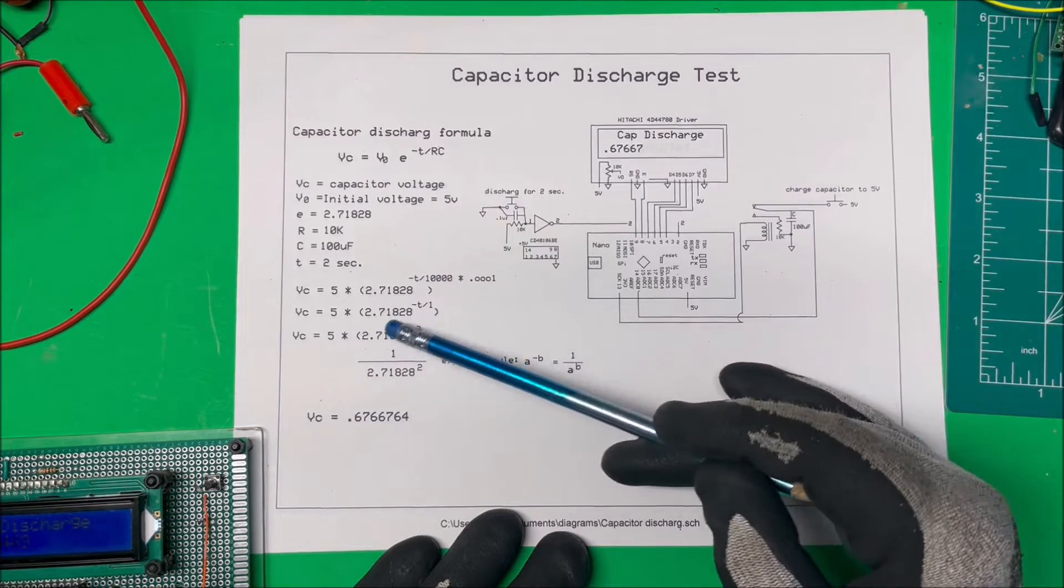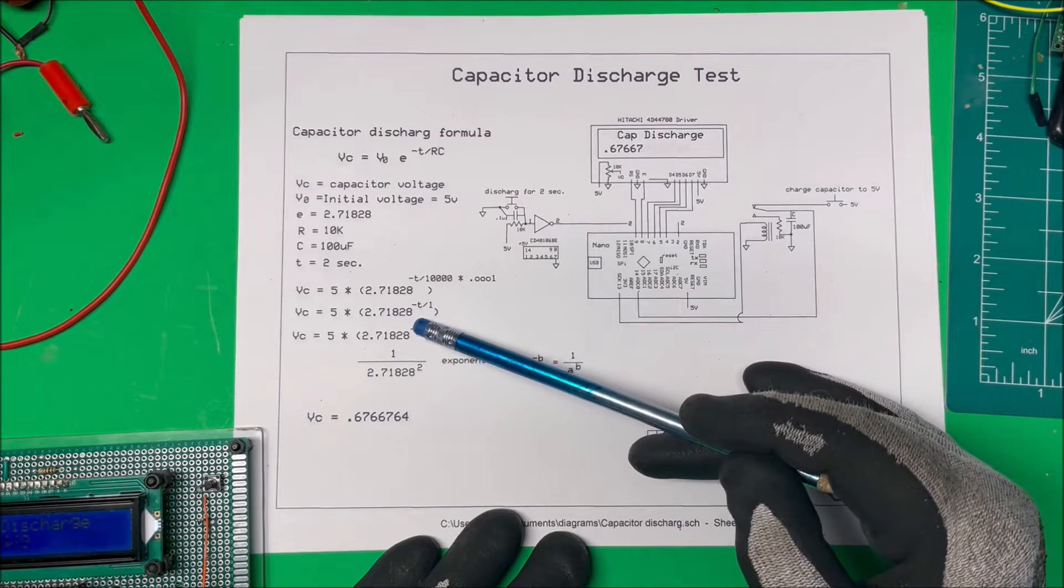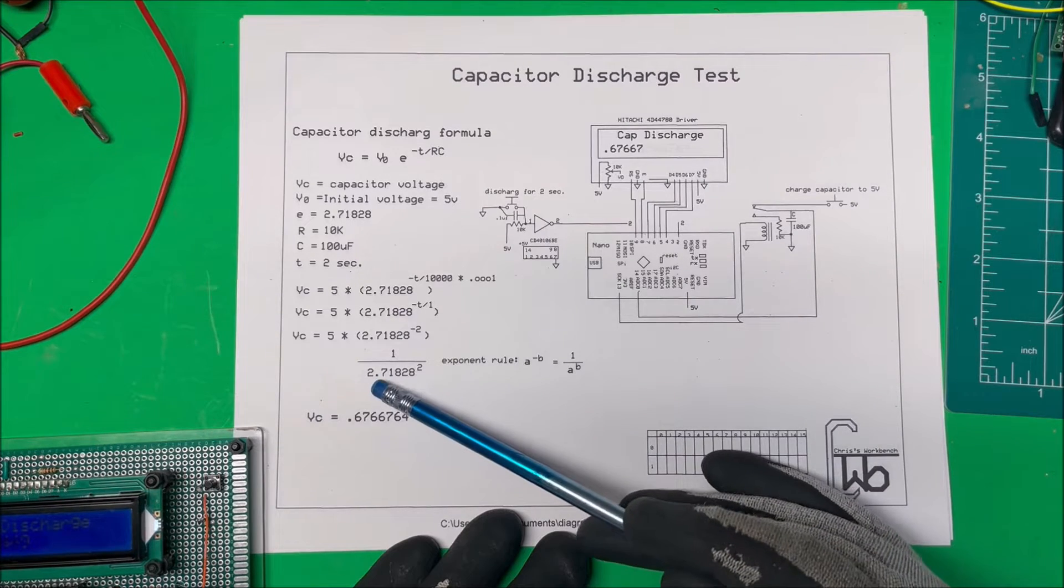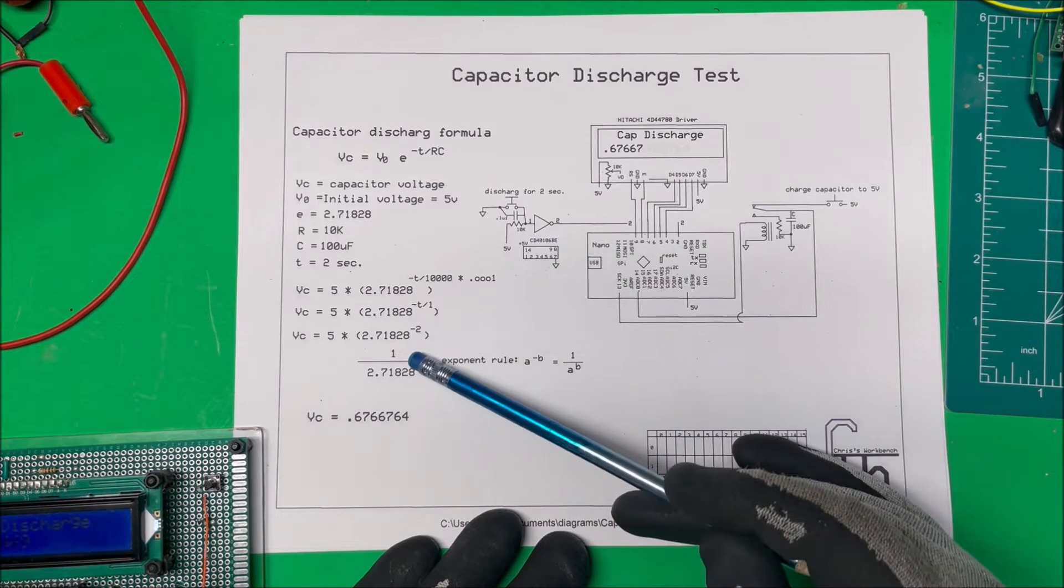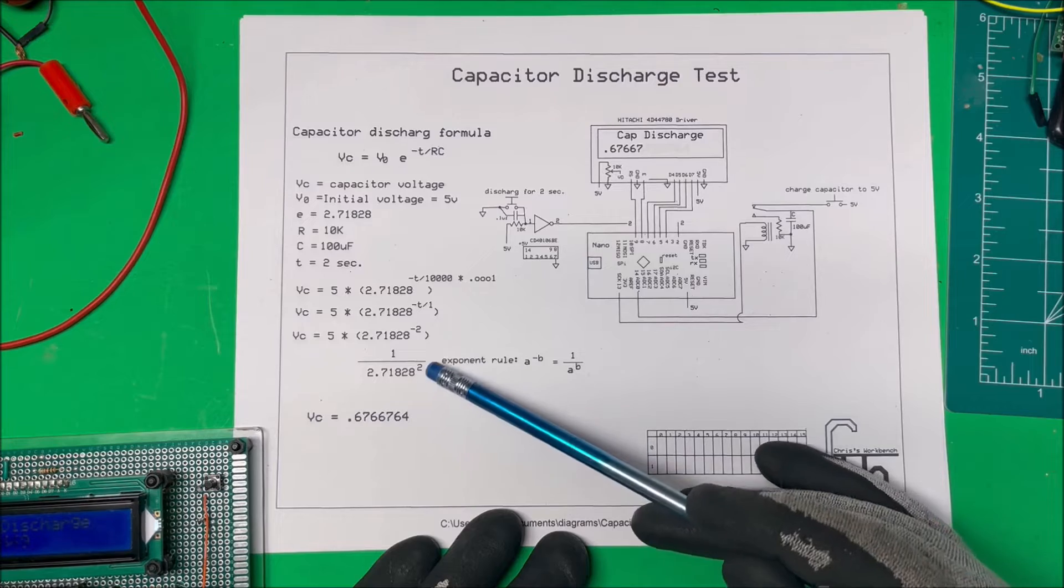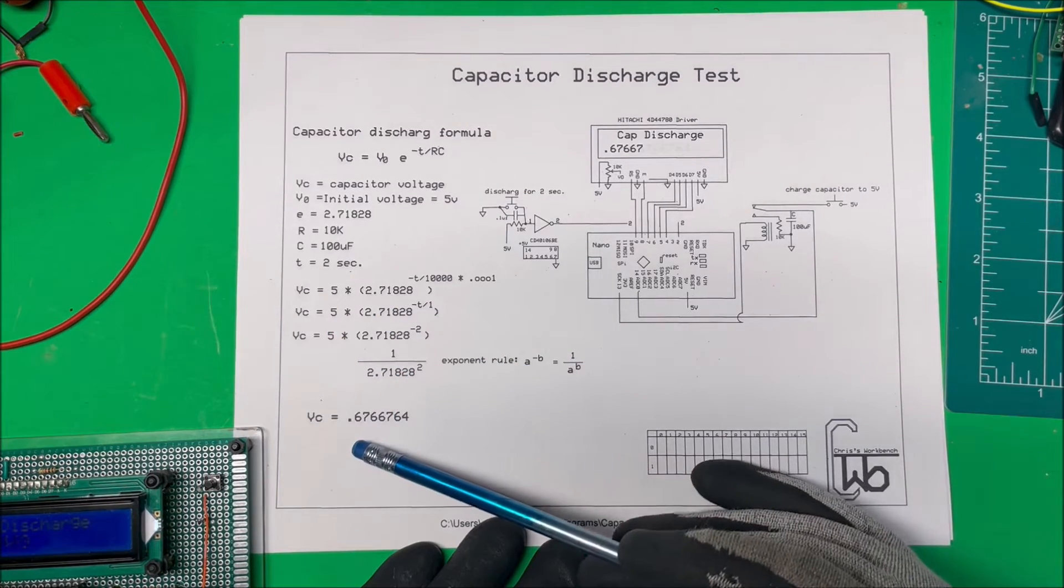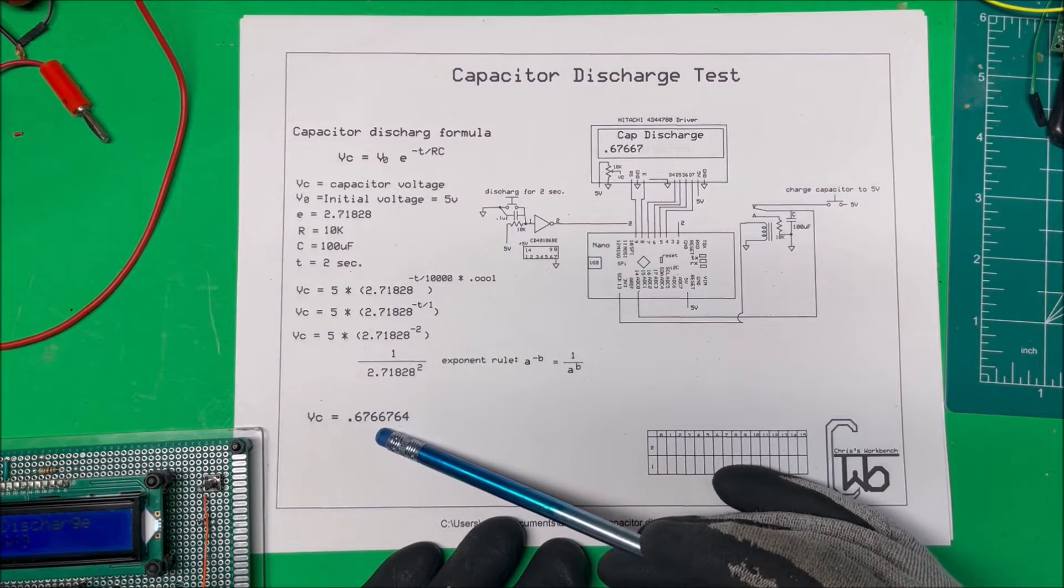Now a lot of calculators can do this to the power of minus two, but if not you can just use this exponent rule down here and you take your Euler's number squared and divide that into one, just take the reciprocal of that. So this and this are the same thing. You multiply that by five and it comes out to 0.6766 something.